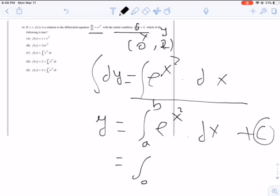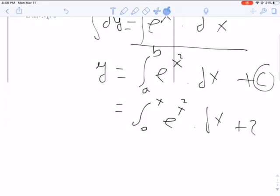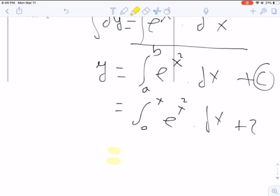We don't have the final condition, so we'll keep it as x. Then we write it as the integral of e^(x^2) dx plus 2. In the question, they wrote it as e^(t^2) dt.